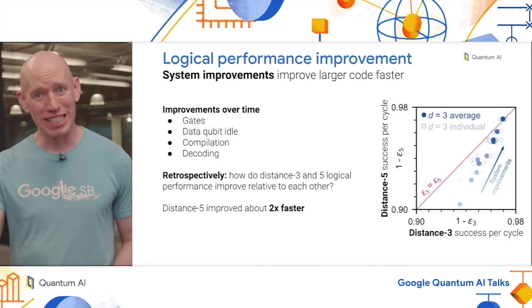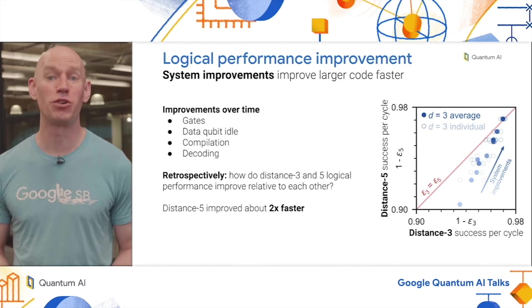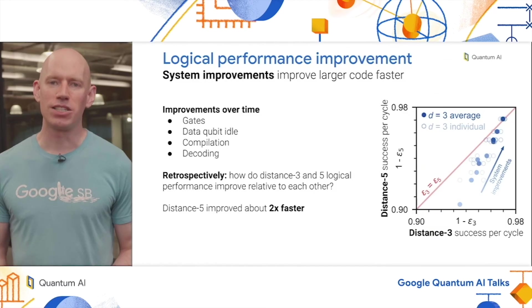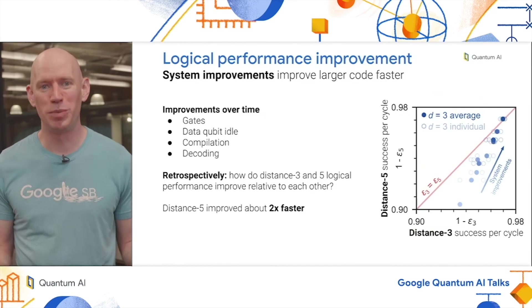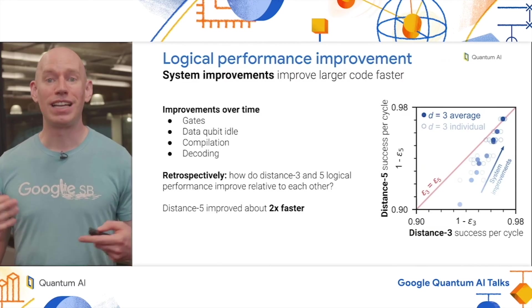It was not the case that we just plugged this thing in and it worked perfectly right away. Actually, we improved the performance over time significantly among many axes, such as the gates, the data qubit idle, the compilation of our circuit, and decoding. But something that's very interesting is to look retrospectively at these experiments and compare how distance 3 and distance 5 improved relative to each other while we improved the system performance. That's what's plotted on the right where we're looking at distance 3 success per cycle on the horizontal axis and distance 5 on the vertical. Earlier on, we saw better performance for distance 3. That's basically the performance wasn't good enough for adding qubits to be worthwhile. But as we improved the system, we observe empirically that the distance 5 improved about twice as fast until we finally broke through this sound barrier and saw distance 5 finally outperforming distance 3.